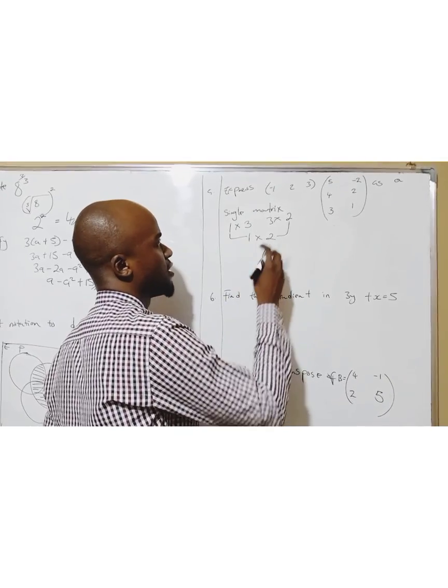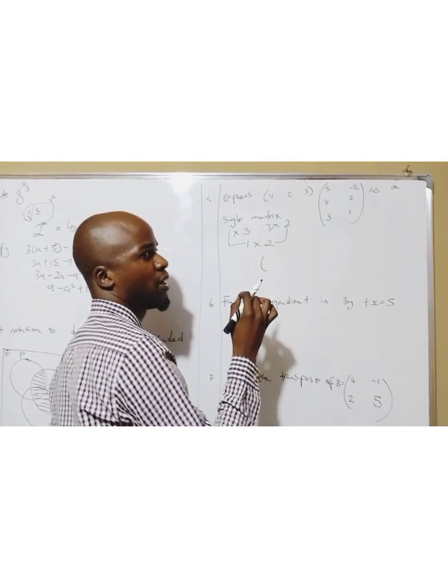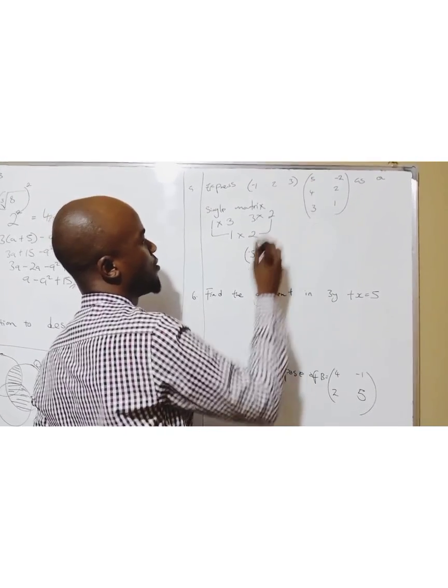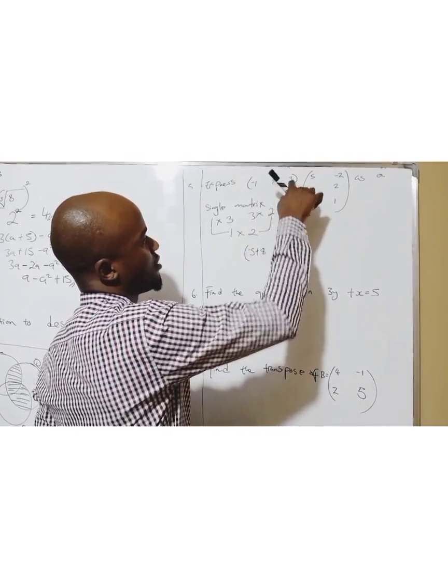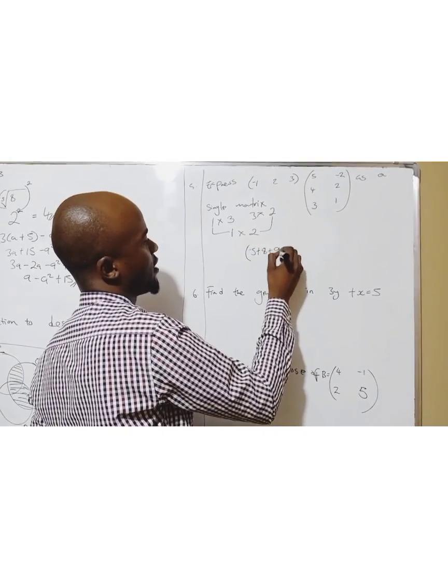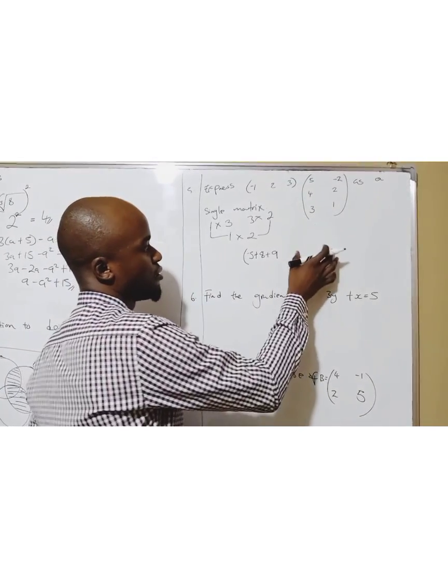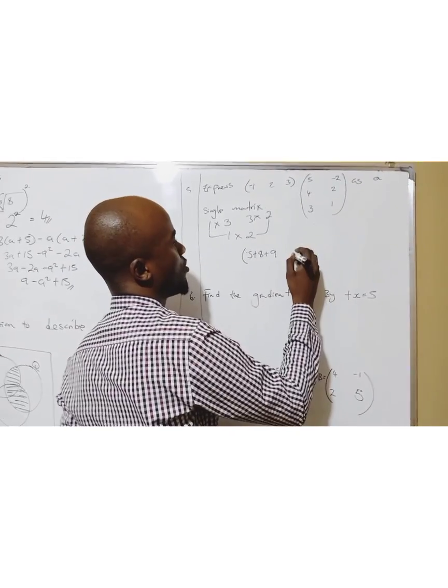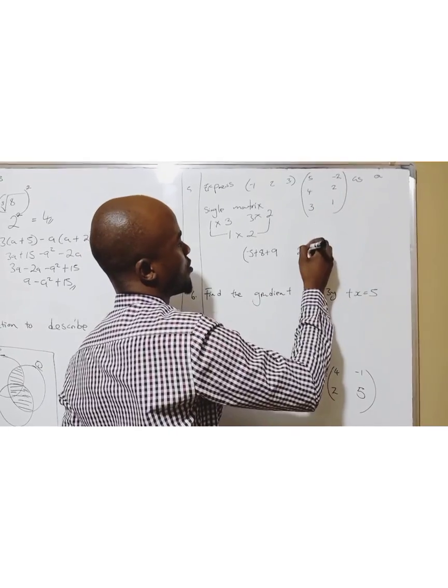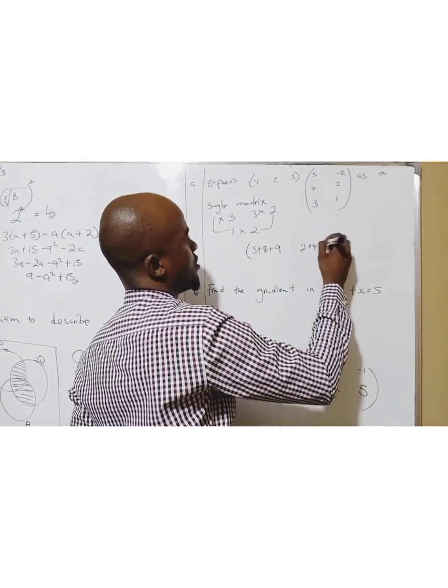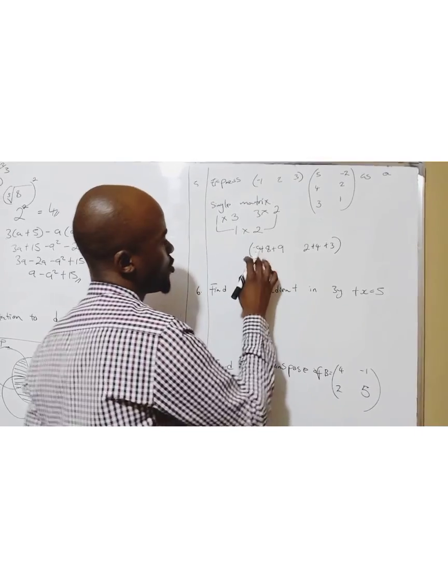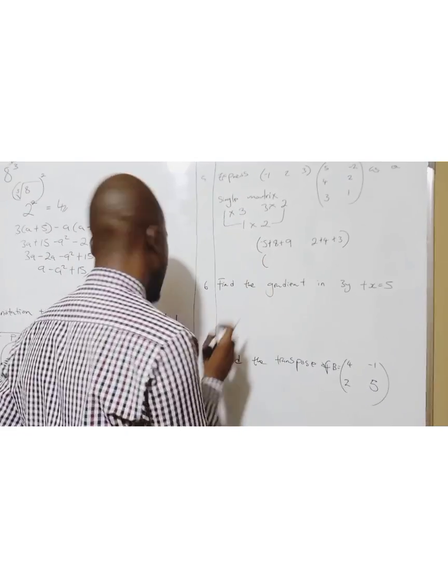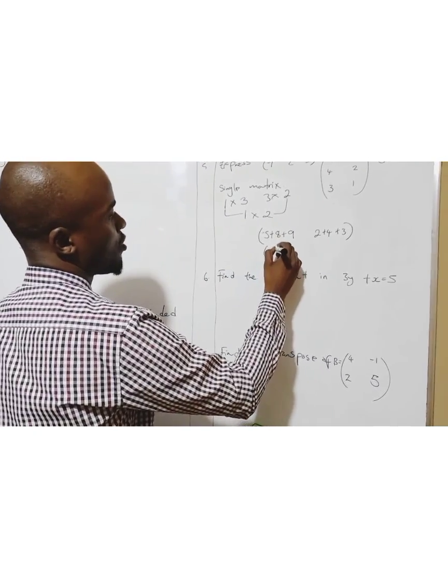Now I can multiply. I start with row by column. Negative one times five is negative five, two times four is eight, three times three is nine. I move on to this side, same row. Negative one times negative two is two, two times two is four, three times one is three.